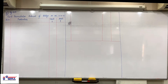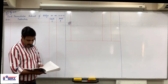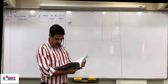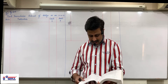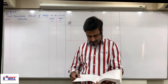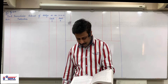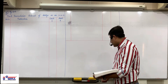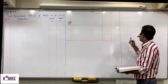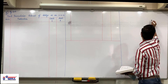Look at page number 269, question number 7. The cash book of Aditya shows a balance of rupees 9,000 on 31/10/13, which does not tally with the bank balance as per passbook. Prepare Aditya's bank reconciliation statement from the information given below.